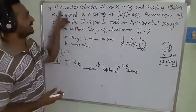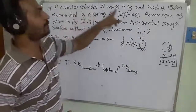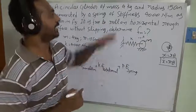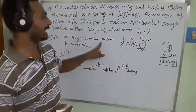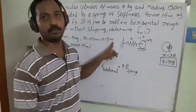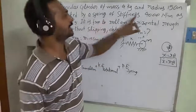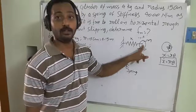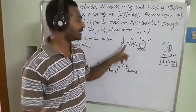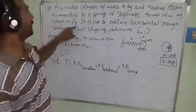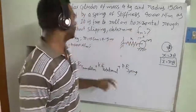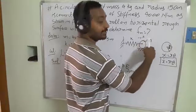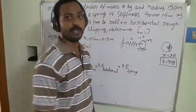Here is the problem: a circular cylinder of mass 4 kg, with radius r equal to 15 centimeters (0.15 meters), connected to a spring of stiffness 4000 Newton per meter. One end of the spring is connected to the circular cylinder and the other end is connected to the wall. The cylinder is free to roll on a horizontal rough surface without any slip.